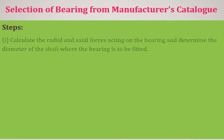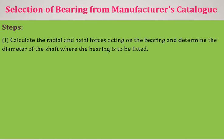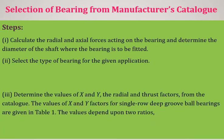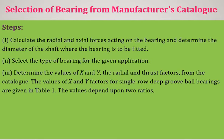What are the different steps in the selection of a bearing? First, we calculate the radial and axial forces acting on the bearing and determine the diameter of the shaft where the bearing is to be fitted. These are the calculations of FR and FA, and we should know the diameter on which the bearing is required to be fitted. Then, the next step is to select the type of bearing — generally we discuss problems related to rolling contact bearings.